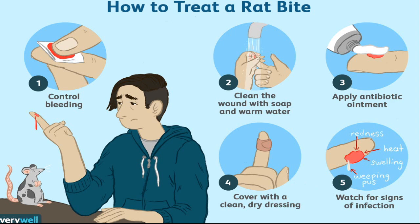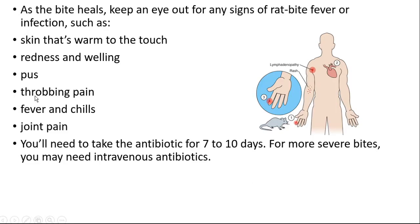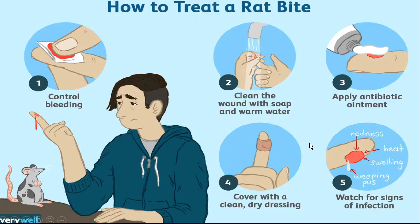Watch for signs that show infection in the wound: redness, heat, swelling, and weeping pus. In this slide, you can see all of these symptoms and the treatment of this disease — redness, heat, swelling, and pus can start to appear.